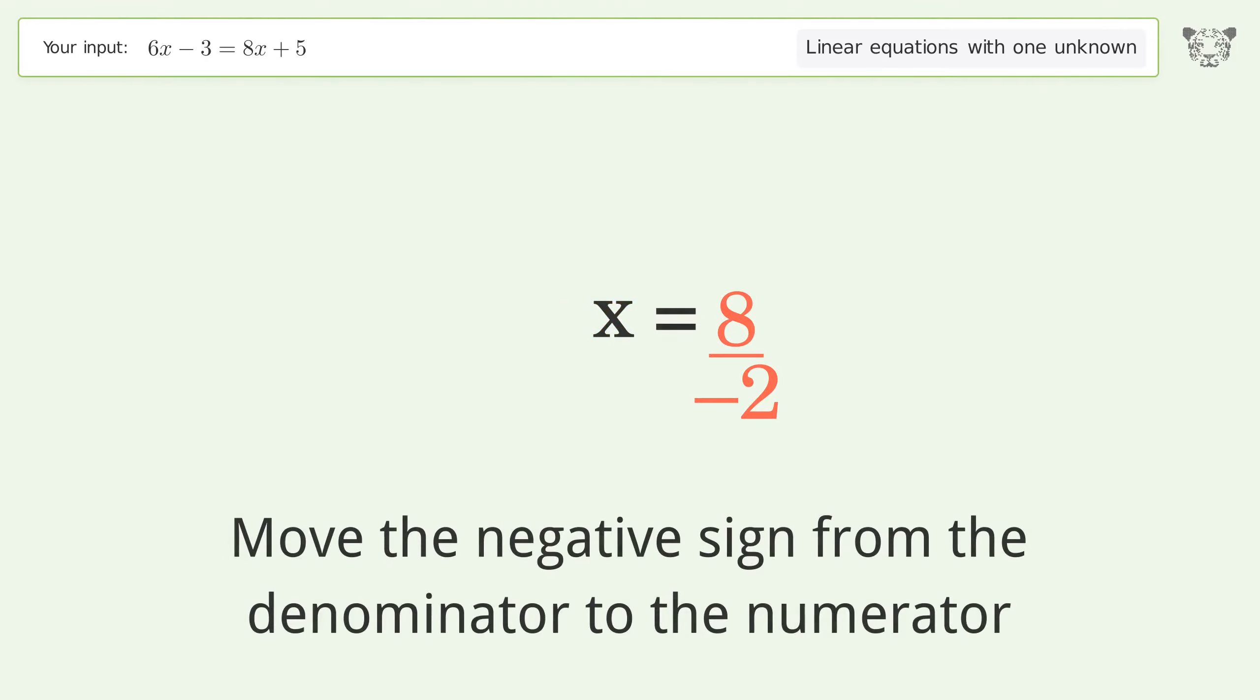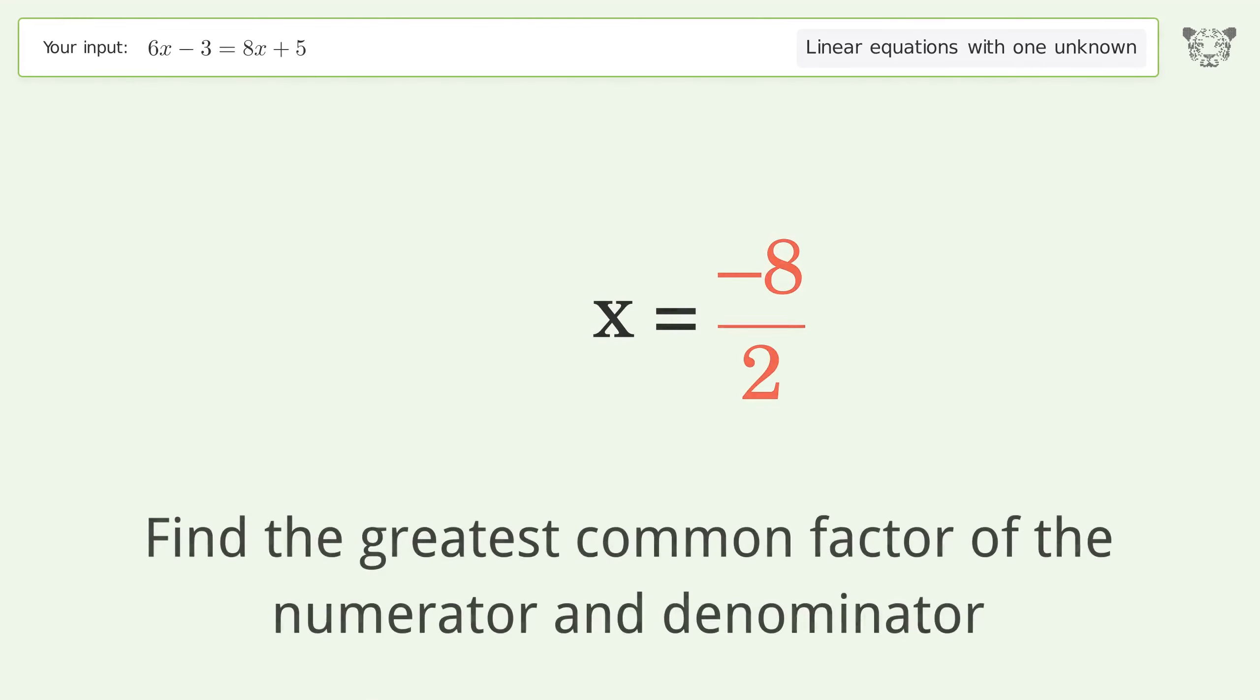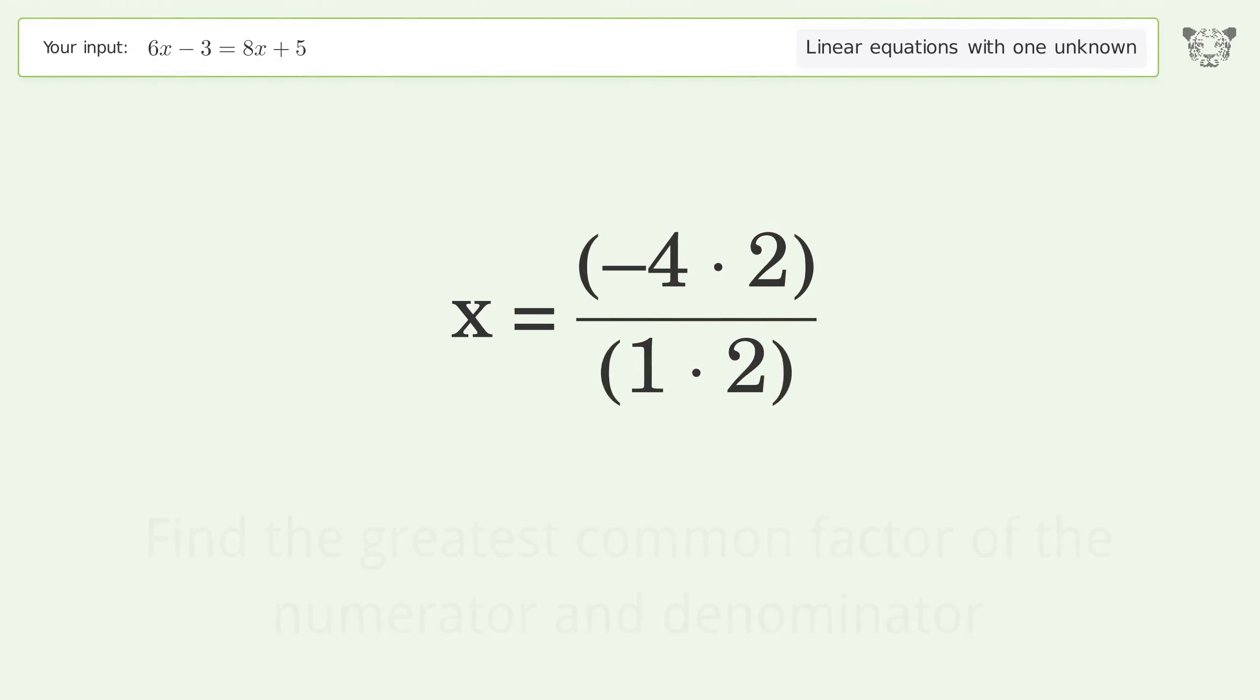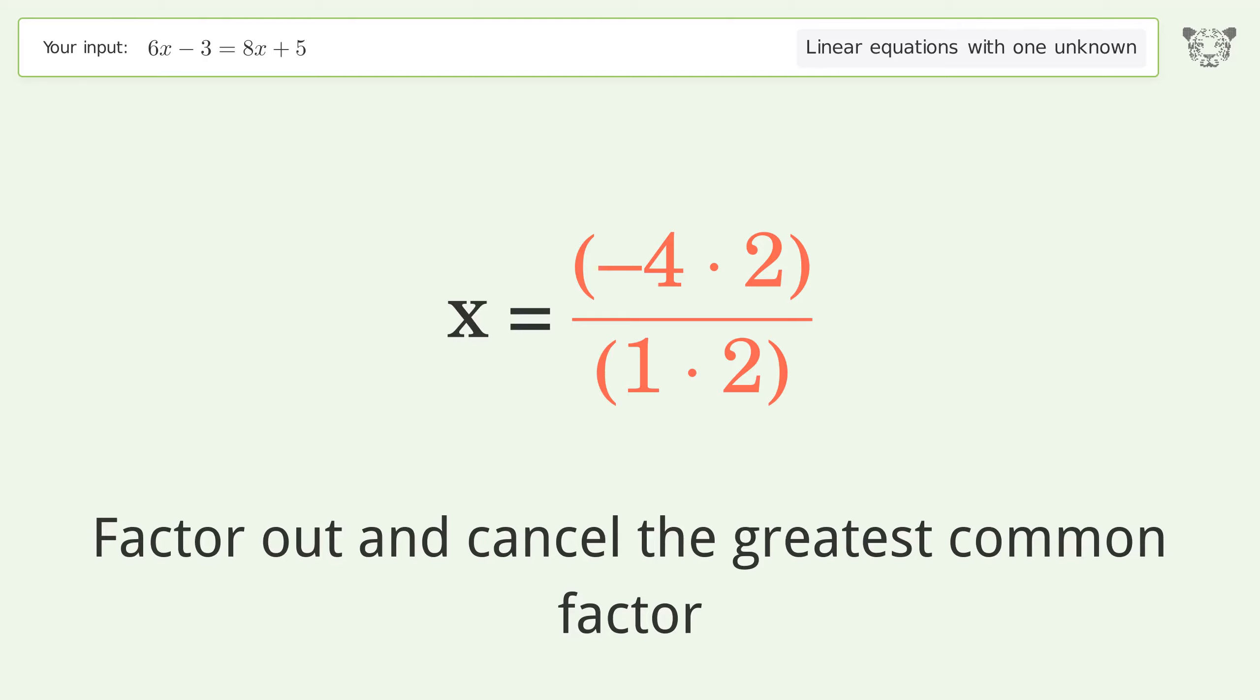Move the negative sign from the denominator to the numerator. Find the greatest common factor of the numerator and denominator. Factor out and cancel the greatest common factor.